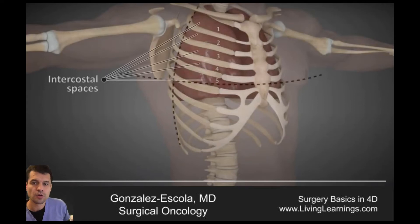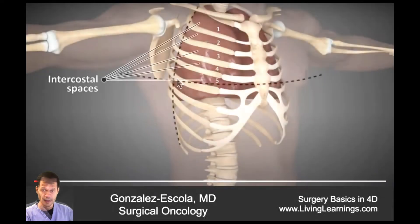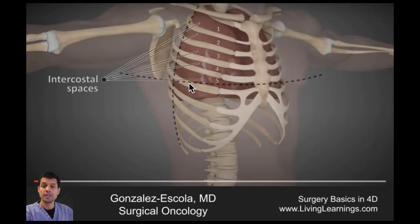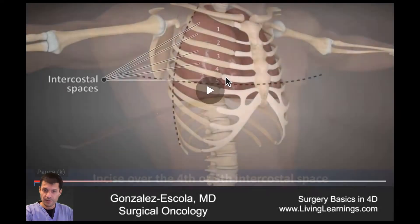I'm a surgical oncologist and general surgeon, and I'll be discussing the steps of chest tube placement. First, the intercostal spaces should be located, and the location of the tube should be over the anterior axillary line over the fourth or fifth intercostal space.